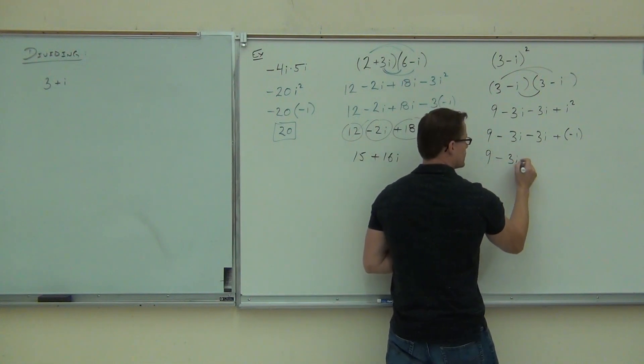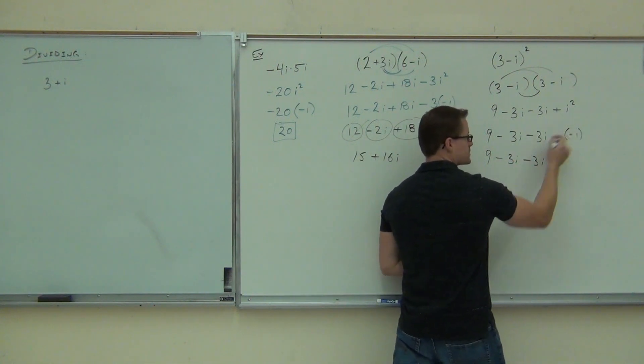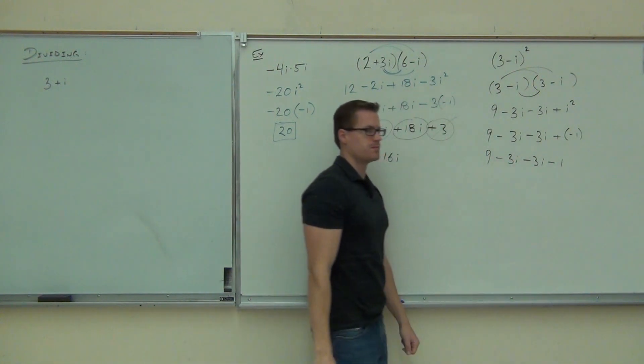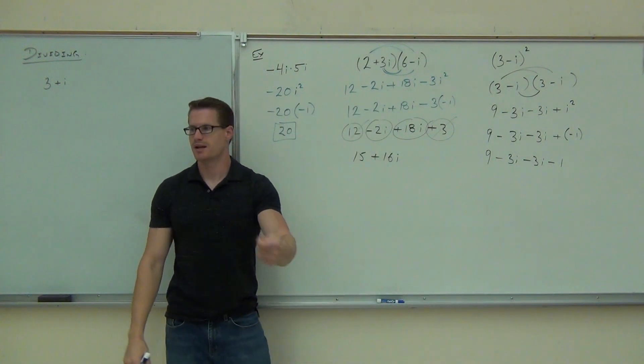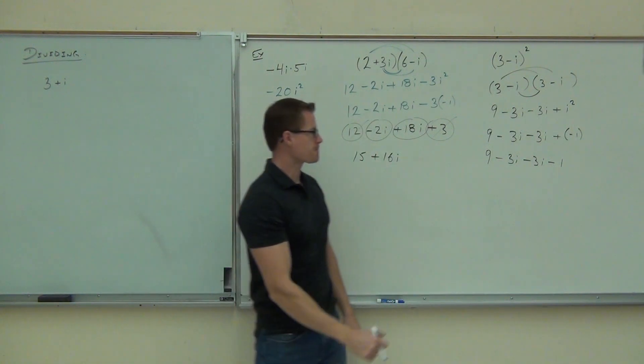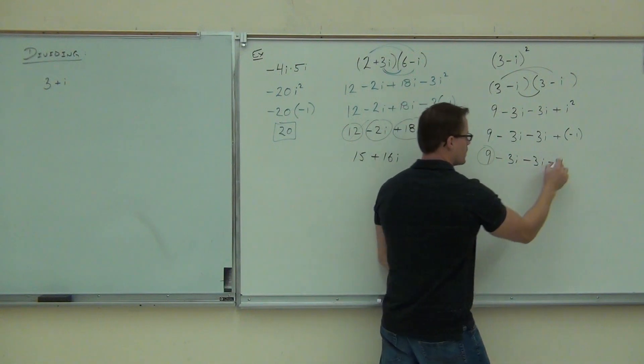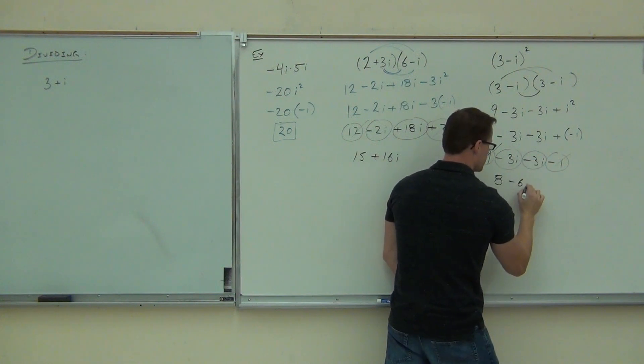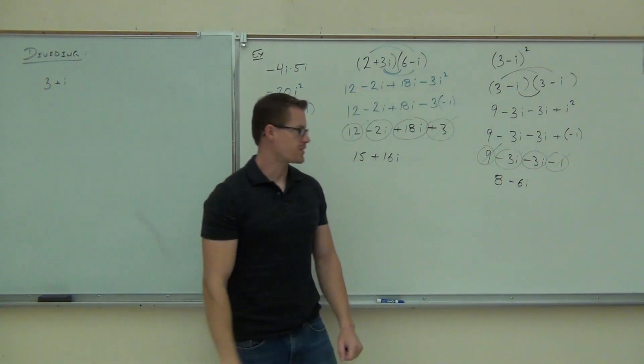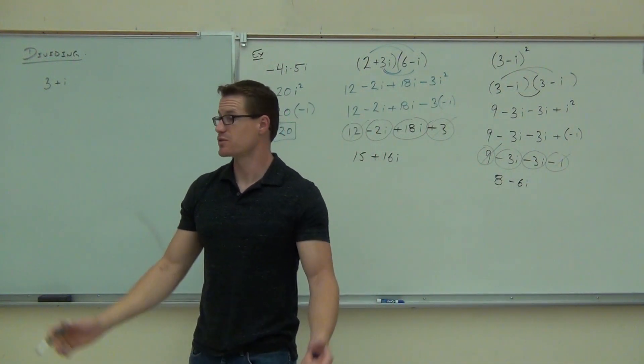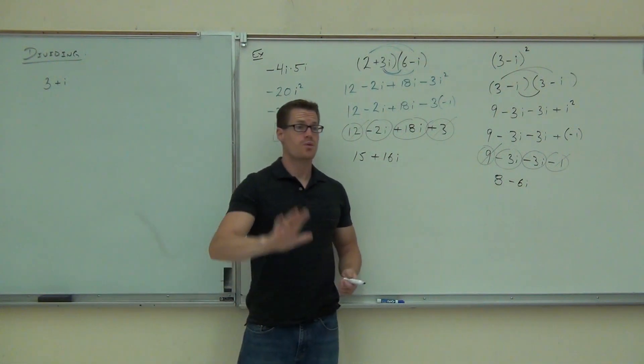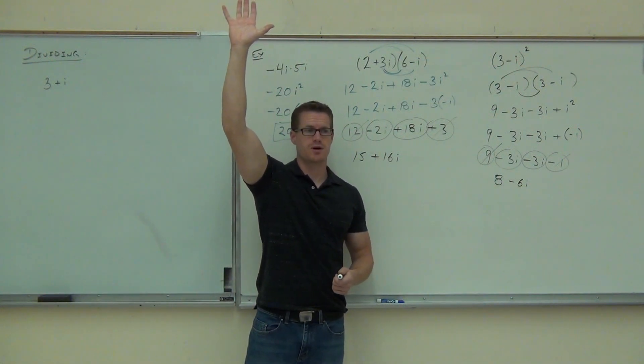What that does is really, instead of plus negative 1, really just gives us minus 1. Plus negative 1 is just minus, it's like a subtractor. We'll combine our like parts here. We'll get 8. We'll get minus 6i. The real part is 8, imaginary part negative 6i. It's certainly a complex number. It's as far as we can go. Raise your hand if you feel okay with our multiplication so far. Good deal.